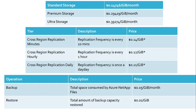Now for the cost aspect. You pay per tier: standard storage costs around $0.14 per GB per month, premium tier is around $0.29 per GB per month, and ultra is around $0.39 per GB per month. For cross-region replication, you pay $0.14 per GB per 10 minutes, $0.12 per GB per hour, or $0.11 per GB per day. Backup and restore costs are additional: $0.105 per GB per month for backup, and $0.02 per GB per month for restore.